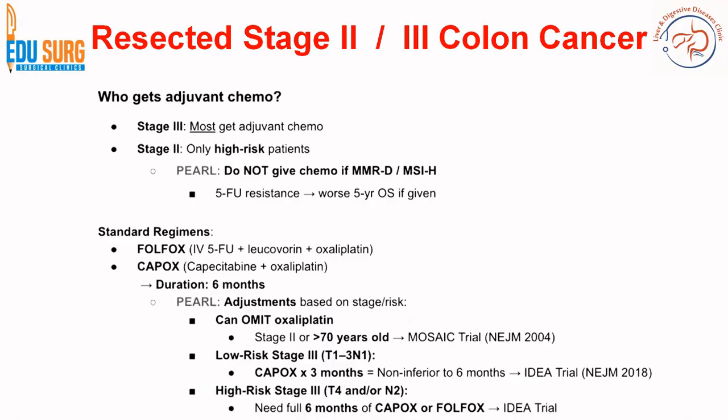High-risk stage 3 is defined as T4 and/or N2. In stage 3, there are two groups, and similarly in stage 2 there are two groups. In stage 2, we differentiate MSI-high from MS-stable. In stage 3, N1 is low risk whereas N2 and T4 are high risk and these need the full 6 months of Capox or Folfox, as per the IDEA trial.